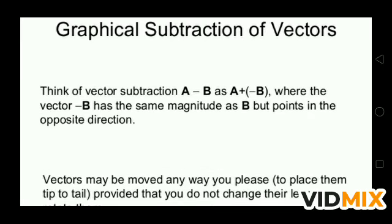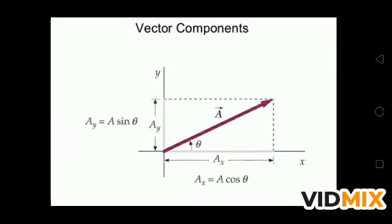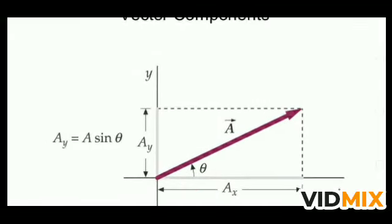Now, graphical subtraction of vectors: A minus B means A plus (minus B), so we reverse the direction of B. If B was pointing south, minus B points north — the magnitude of B remains the same but the direction is opposite. When subtracting, the vector minus B has the same magnitude as B but points in the opposite direction. Vectors may be moved to place them tip to tail, provided you do not change their length nor rotate them.